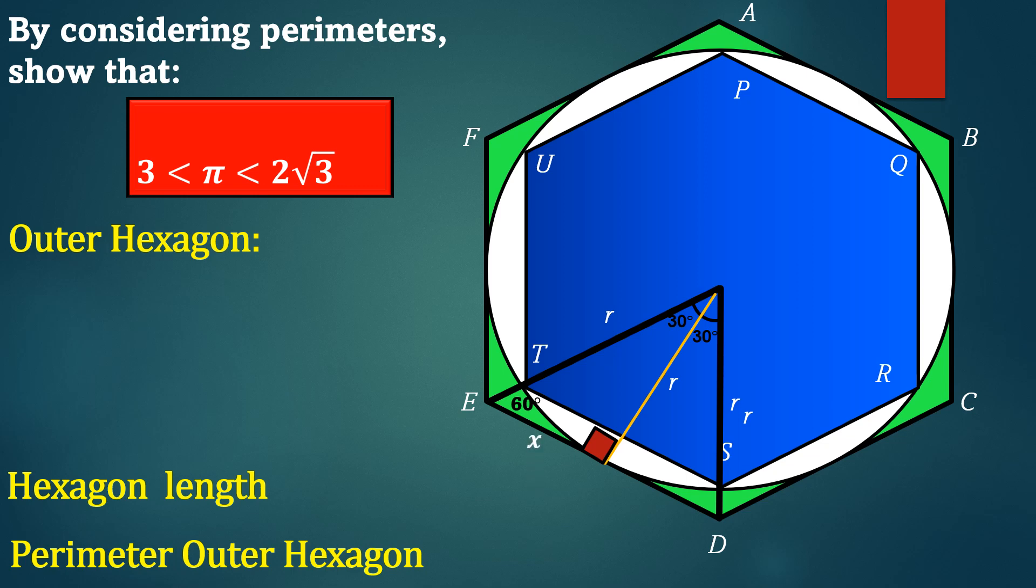Next, we can calculate the value of X using tan of an angle. If we recall, to calculate tan of an angle, it is simply the opposite side divided by the adjacent. So, tan of 30 is equal to the opposite side X divided by the radius. Tan of 30 is equal to root 3 divided by 3. If we cross multiply, we will get 3X is equal to r root 3. Therefore, X is equal to r root 3 divided by 3.